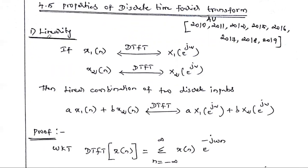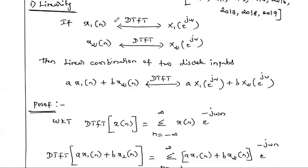The linearity property means if a transform obeys the superposition principle, it is called linear. To prove this, we consider two input signals x1(n) and x2(n). If the DTFT of x1(n) is X1(e^jω) and the DTFT of x2(n) is X2(e^jω), we are individually calculating the DTFT for each signal.